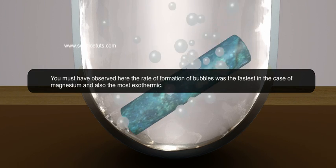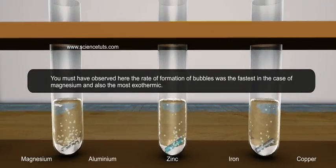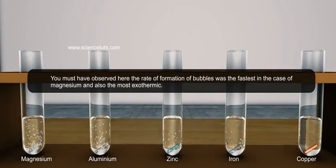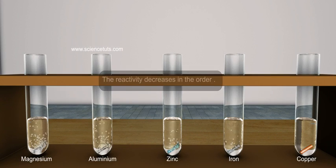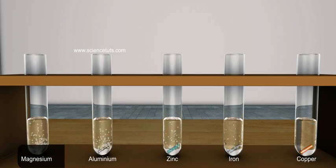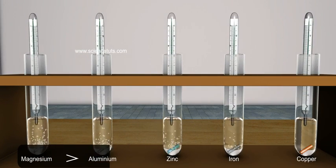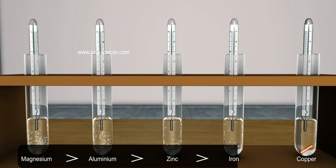You must have observed here the rate of formation of bubbles was fastest in the case of magnesium and also the most exothermic. The reactivity decreases in the order magnesium greater than aluminum, greater than zinc, greater than iron.